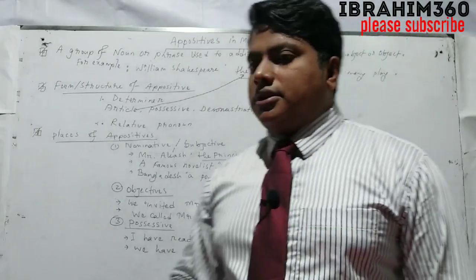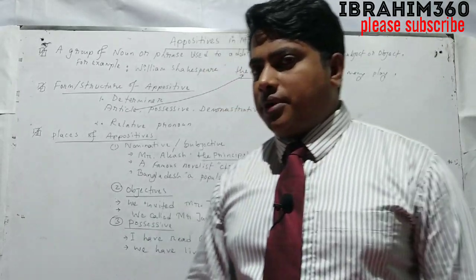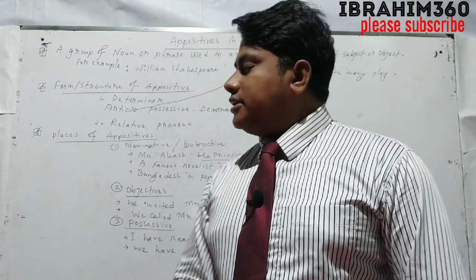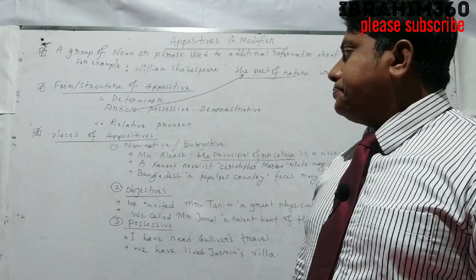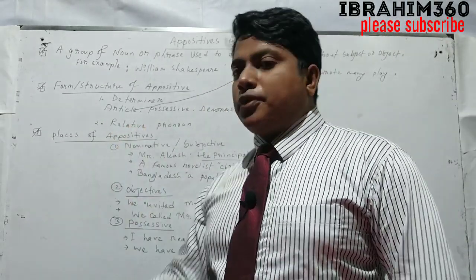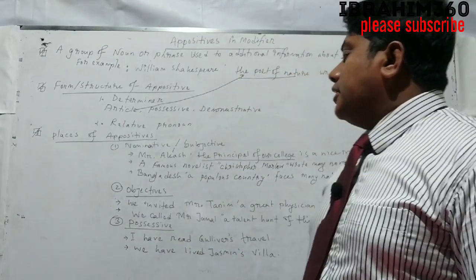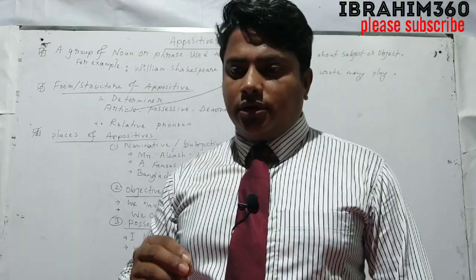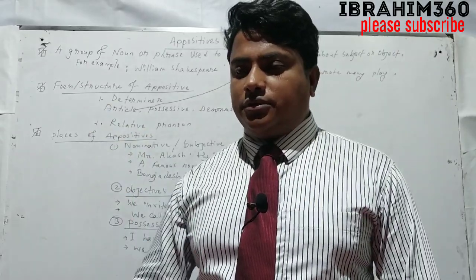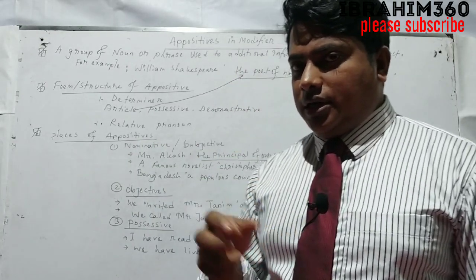Demonstratives include: this, that, those, these. After determiners, we have relative pronouns. For example: I know the person who owned the game came back to the house. Here, 'who owned the game' gives additional information about 'the person' — that is the appositive.